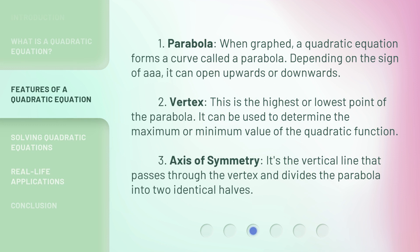1. Parabola. When graphed, a quadratic equation forms a curve called a parabola. Depending on the sign of a, it can open upwards or downwards.